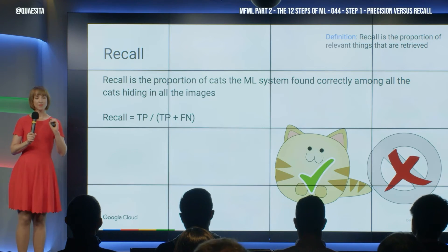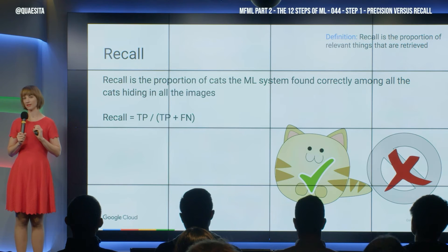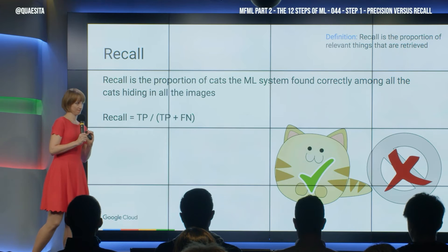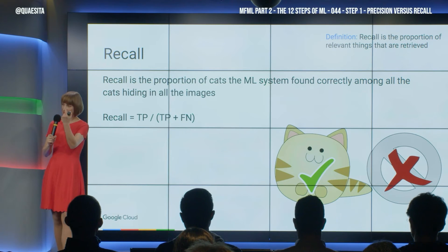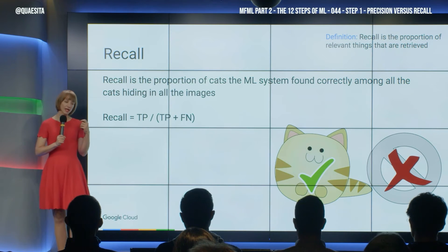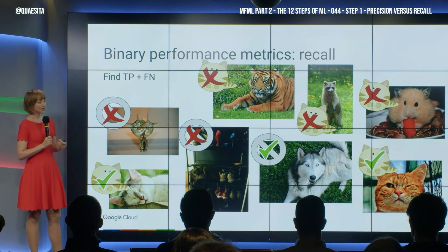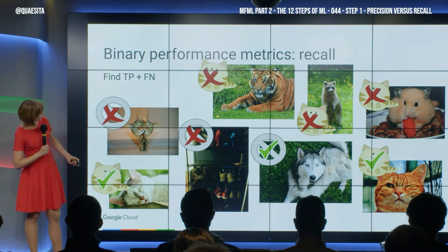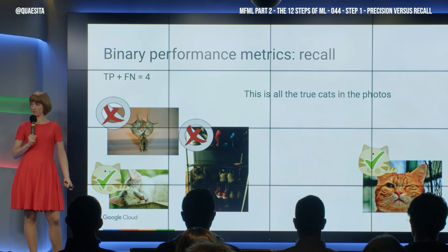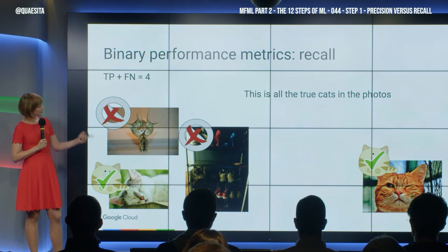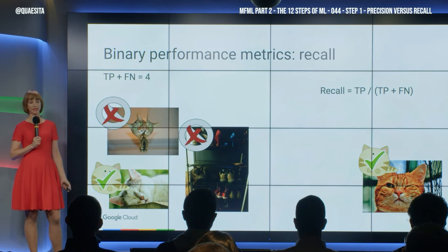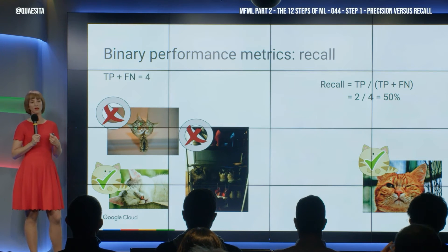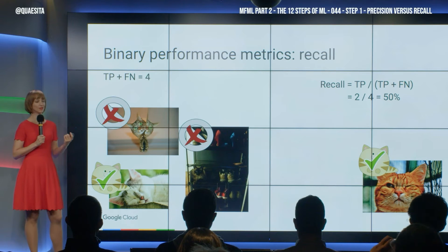Recall has the same numerator but a different denominator. Recall says: of the things that were actually cats, how many of them did it return for us? In order to compute it, we need to know what was actually a cat — and that's those four. Of them, how many did it give us back correctly? Two out of four, giving us a recall of 50%. Different metric.